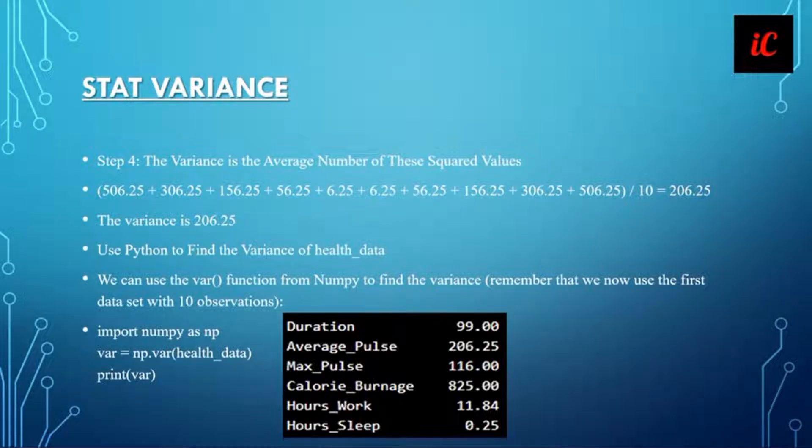Fourth, the variance is the average of the squared values. Whatever values you have found, just divide by 10 because 10 observations are available. Now on screen you can see that 206.25 is the variance.